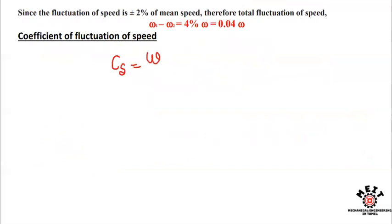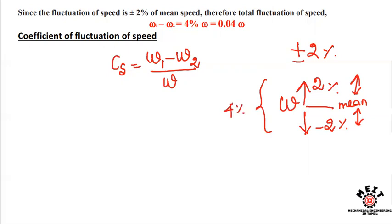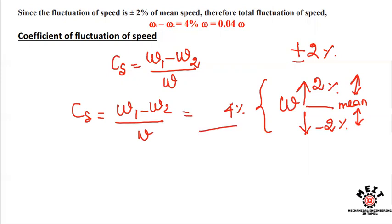The coefficient of fluctuation of speed Cs equals (ω₁ minus ω₂) divided by ω, which is equal to 4 percent, since the speed fluctuates plus or minus 2 percent giving a total of 4 percent. Therefore Cs equals 0.04.